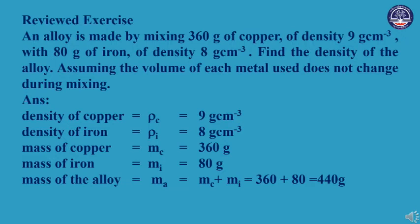An alloy is made by mixing 360 grams of copper of density 9 grams per cubic centimeter with 80 grams of iron of density 8 grams per cubic centimeter. Find the density of the alloy.